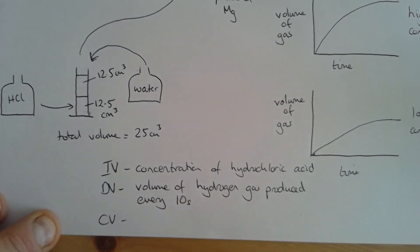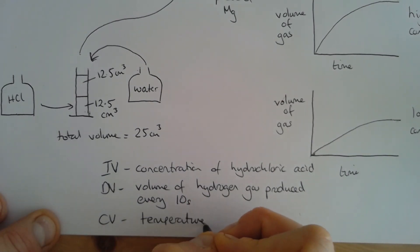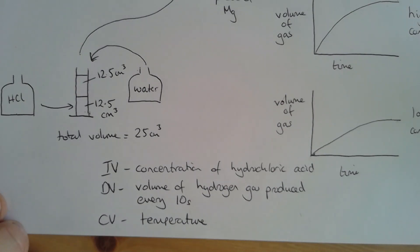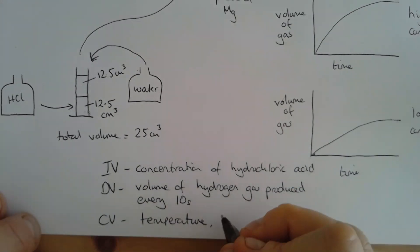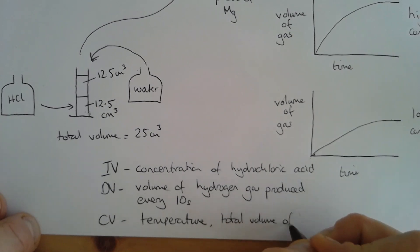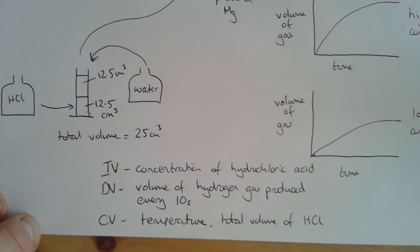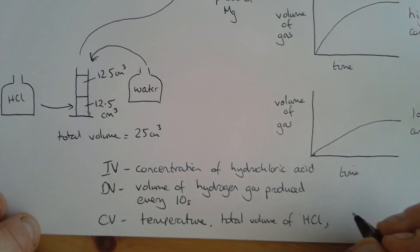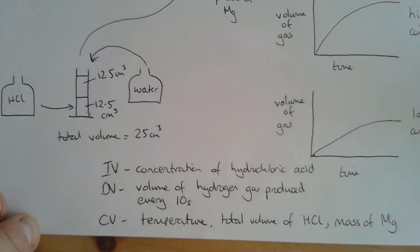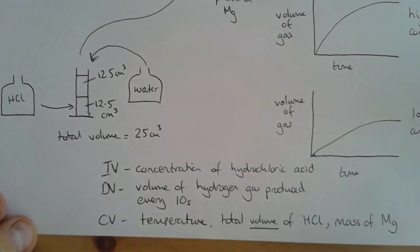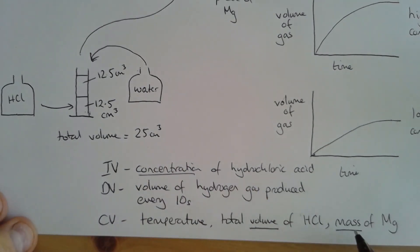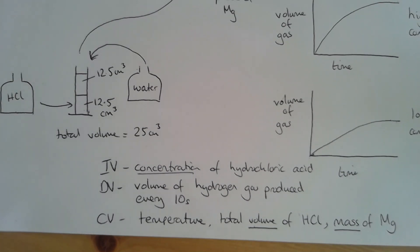Now we need to think about control variables. There are three obvious control variables here. The temperature, which we'd need to keep the same — so if we did it at room temperature, we'd have the same results every time. The total volume of hydrochloric acid, written as HCl. And the mass of magnesium. Notice I haven't said amount — I need to be very specific. When we talk about solutions, we talk about their volume and also their concentration. When we talk about solids, we talk about their mass, and we could also talk about their surface area.